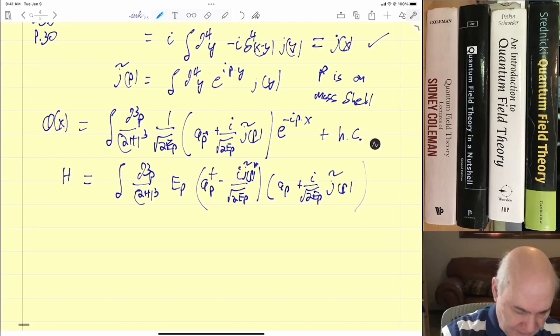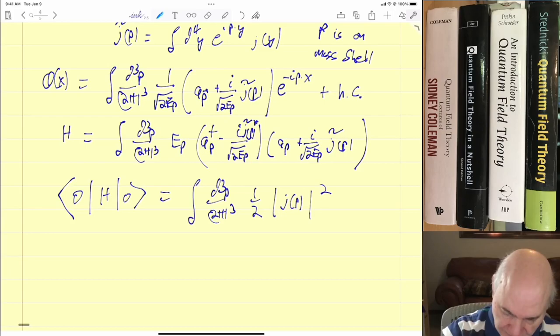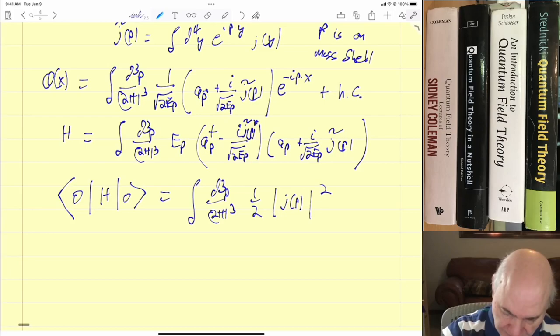So this is the Hamiltonian, and then if you want to find out how much energy you made, and you can also find out how many particles you made, it's very simple. Here remember the a will kill the vacuum and the a† will kill the vacuum on the other side. So we'll end up getting a very nice expression, one-half the absolute value of j(p) squared. So that's all I wanted to cover in Peskin and Schroeder Chapter 2.